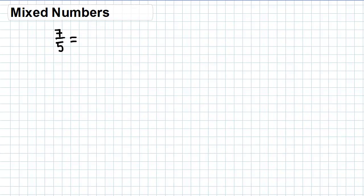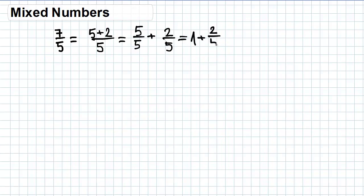Improper fractions can be written in the form of mixed numbers. Mixed numbers represent the sum of a non-zero integer and a proper fraction. For example, seven-fifths is an improper fraction, but we can write it as a mixed number. First, we write seven as five plus two over five. This gives us five over five plus two over five, which equals one plus two-fifths. In short notation, we write this as one and two-fifths — and this is the mixed number. Please remember that the mixed number represents the sum between a non-zero integer and a proper fraction, not the product.